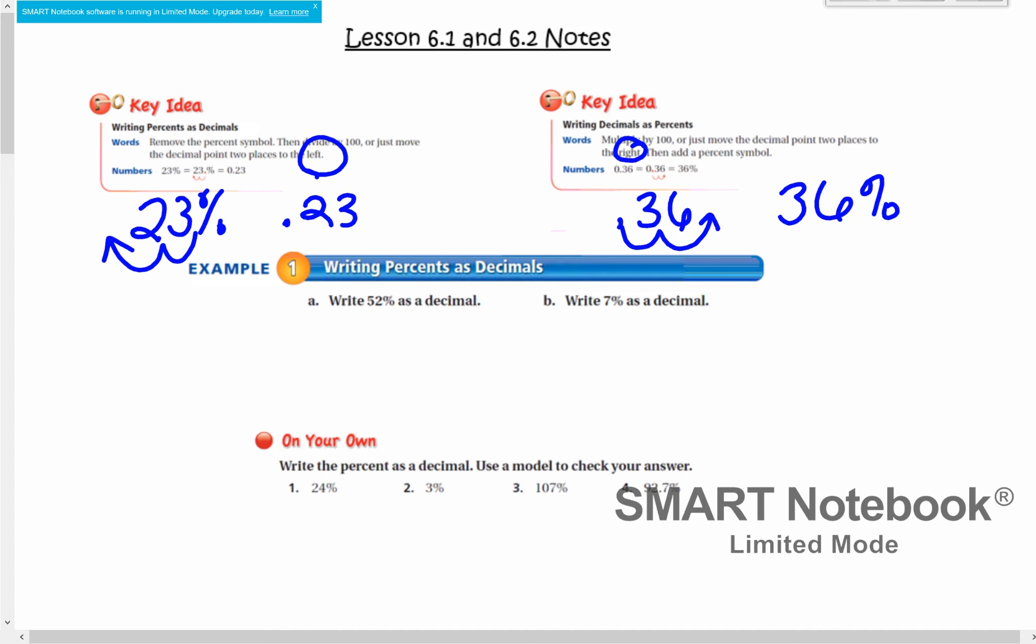Let's do example one. We are writing 52% as a decimal. So we have 52%, we are dividing by 100, so we are moving two places to the left, which makes it 0 and 52 hundredths. Same thing with 7%, except we're going to run into a situation where we need a placeholder. We need to placehold that empty space with a 0, so this decimal is going to be 0 and 7 hundredths.